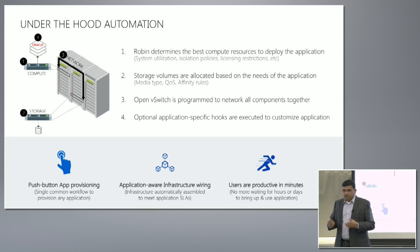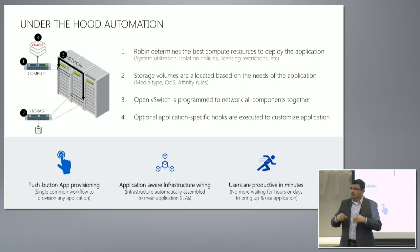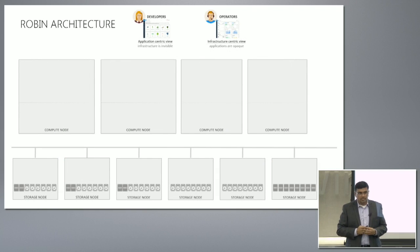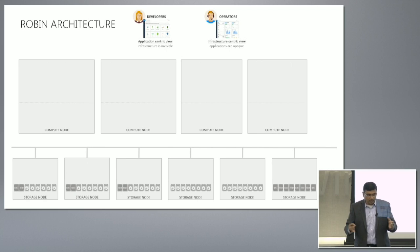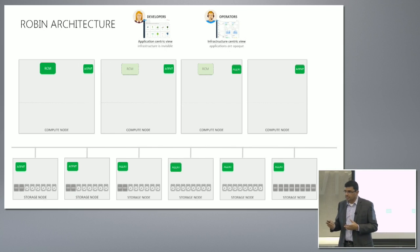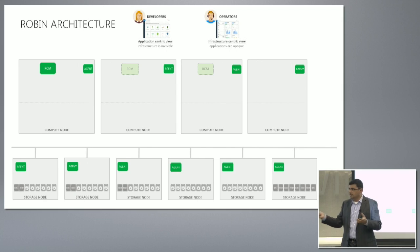Let me go a little deeper. I've talked about provisioning — let's go one step down and see under the hood what is happening on the servers. For simplicity, I have separated storage and compute here, but you could coexist them together as a converged node. When you install the Robin software, a few components get installed. The first is what we call an RCM and an agent. RCM is the Robin Cluster Manager — it's the brains behind everything. The agent is a workhorse that takes tasks spun out by RCM and executes them using the primitives I talked about.